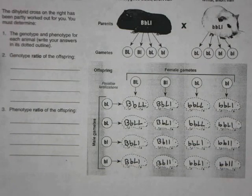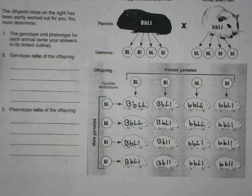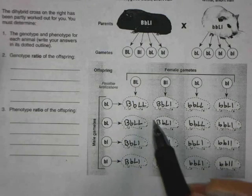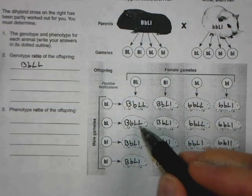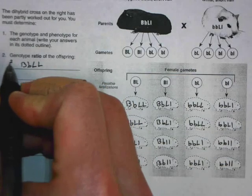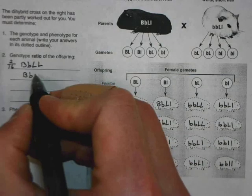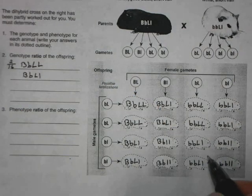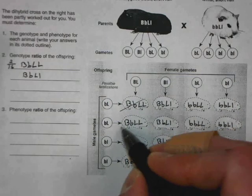Now, to determine the genotype ratio for the offspring, I can just count these up just like a monohybrid cross — there are just a few more this time. I can see quite a few different possibilities. To help me keep track of which ones I've counted, I like to cross them off with a little line.